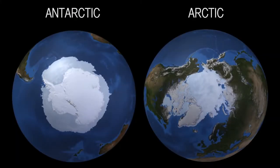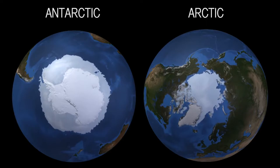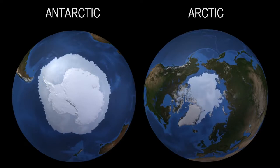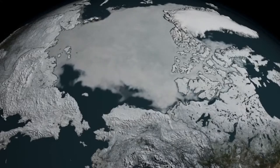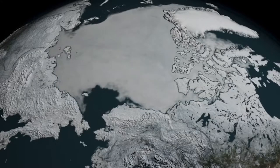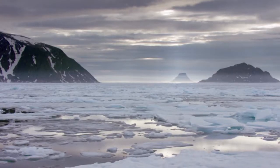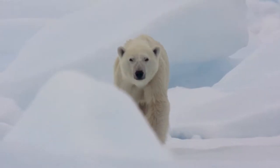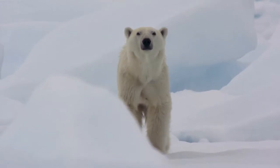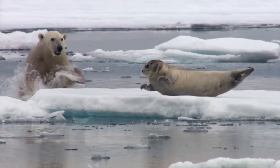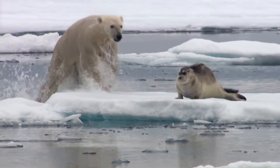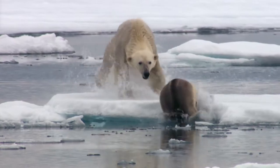The extreme cold found in the polar regions leads to physical processes not found at other latitudes. For example, the ocean can freeze, forming what is called sea ice. Polar bears live on the sea ice, and they use sea ice as a platform to hunt seals, their primary food source.